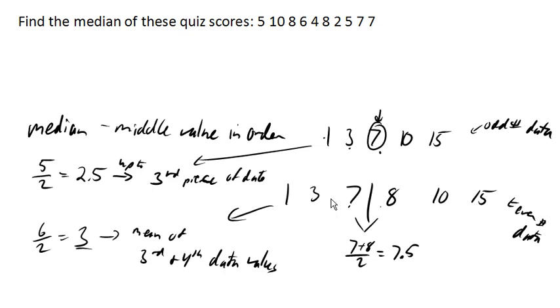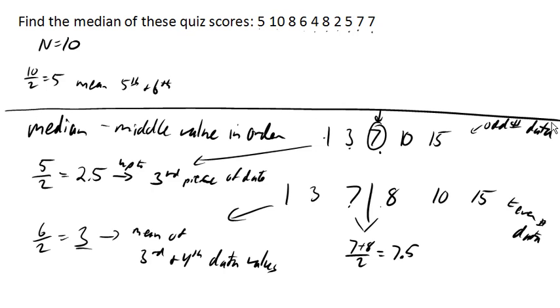So here we have a set of data. I have 1, 2, 3, 4, 5, 6, 7, 8, 9, 10 pieces of data. So we use the letter N to represent the number of data. And so this is the even case. So I can say 10 divided by 2 is 5. And so we're going to need the mean of the fifth and sixth data values here. But most importantly, we first need to put our data in order from smallest to biggest. Or biggest to smallest, doesn't really matter. But I'm going to go small to big here.